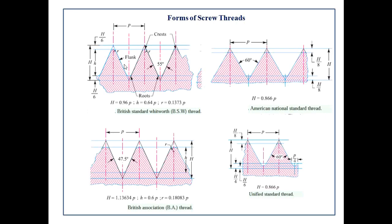The British Standard Pipe (BSP) threads with fine pitch are used for steel and iron pipes and tubes carrying fluids. In external pipe threading, the threads are specified by the bore of the pipe. The British Association (BA) threads have an angle of 47.5 degrees instead of 55 degrees, and are used for instruments and other precision work. So based on the application you can select the appropriate thread — BSW at 55 degrees or BA at 47.5 degrees.